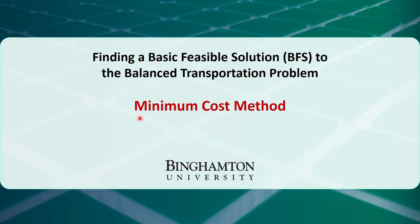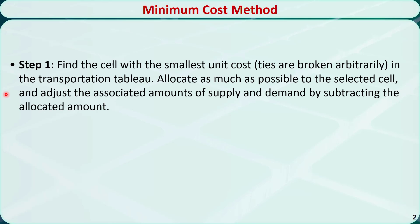There are three steps. In step 1, we need to find the cell with the smallest unit cost in the transportation tableau. Ties are broken arbitrarily, which means if there are two or more cells with the same smallest unit cost, randomly select one of them. Then allocate as much as possible to the selected cell and adjust the associated amounts of supply and demand by subtracting the allocated amount.